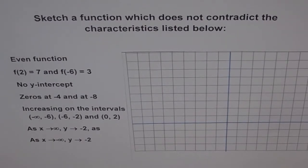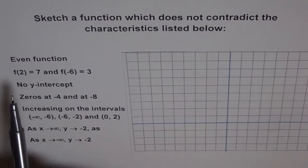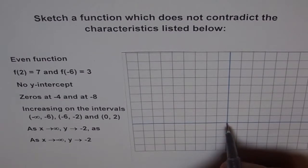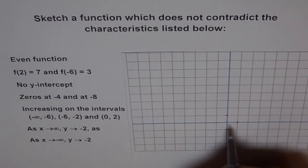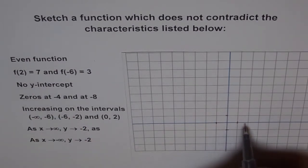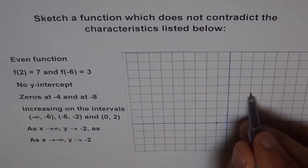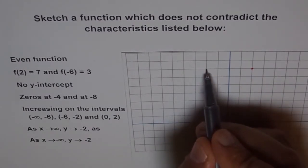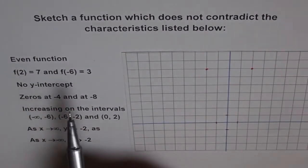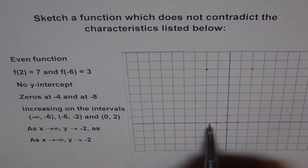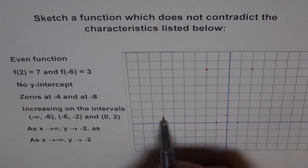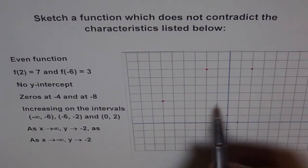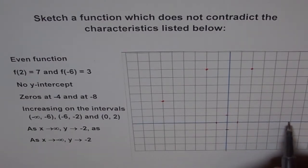An even function means whatever is on the left side is also on the right side. First, we plot these points on our coordinate system. f(2) = 7 means at x = 2 we have y = 7, so we mark that point. Since it's an even function, we also mark the symmetric point on the other side. f(-6) = 3, so at x = -6 the function value is 3, and again we mark the symmetric point at x = 6.